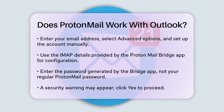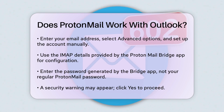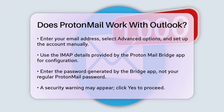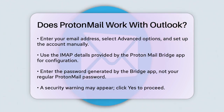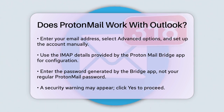For Outlook 2019 on macOS, the process is similar but involves slightly different menu paths. You go to the Tools menu, select Accounts, and then follow similar steps to add your account manually using the IMAP settings from the Bridge app.